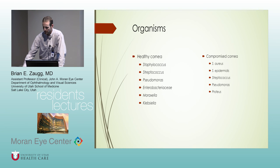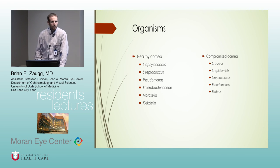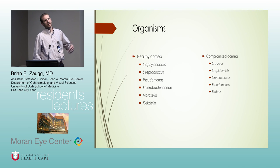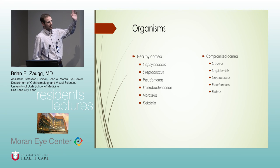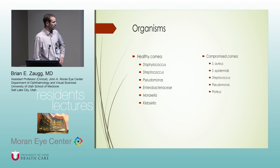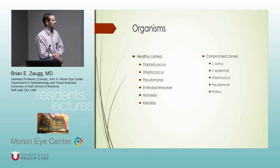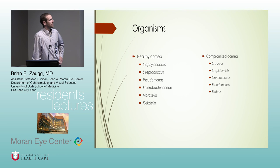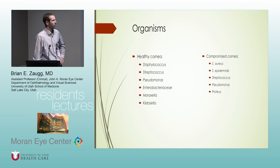If you have a healthy cornea, these are some of the bacteria that are pretty common - meaning somebody who doesn't have neurotrophic keratopathy or basement membrane disease or dry eye. These are things that can just get into a normal healthy cornea, mostly off a contact lens. This year I've seen a lot of pseudomonas - obviously it's probably the most common ulcer that we see - but I've also seen a lot of Moraxella and a couple of Enterobacter. In a compromised cornea there's not really a lot of difference, but we think about Proteus a little bit more. Some of the strep and staph species come up more commonly when the cornea is compromised.